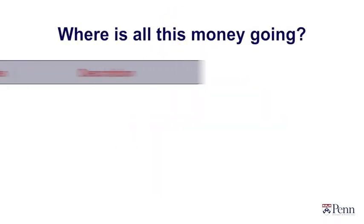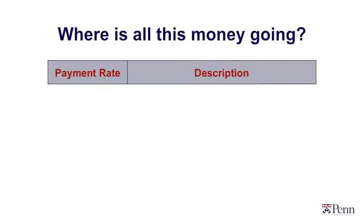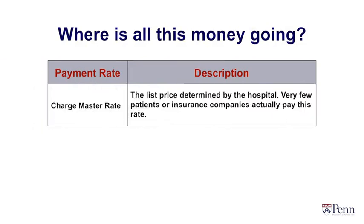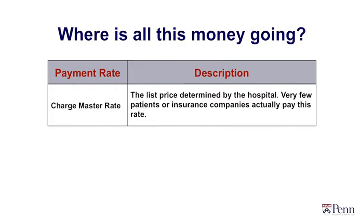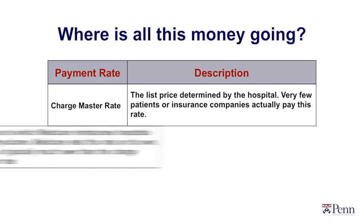It turns out that's only one part of the complexity of paying hospitals. In fact, there are six different payment rates to hospitals. The often most famous one is called the chargemaster rate — that's the rate hospitals list, what they would charge someone without insurance or someone visiting from a foreign country. It's typically the list price. A second rate is the Medicare rate.